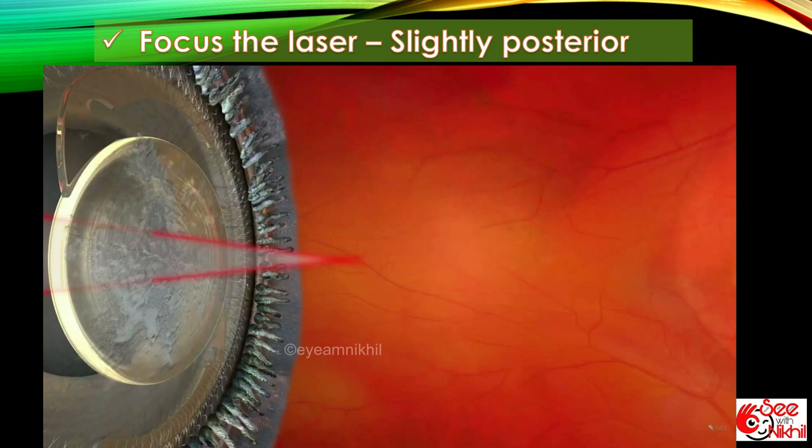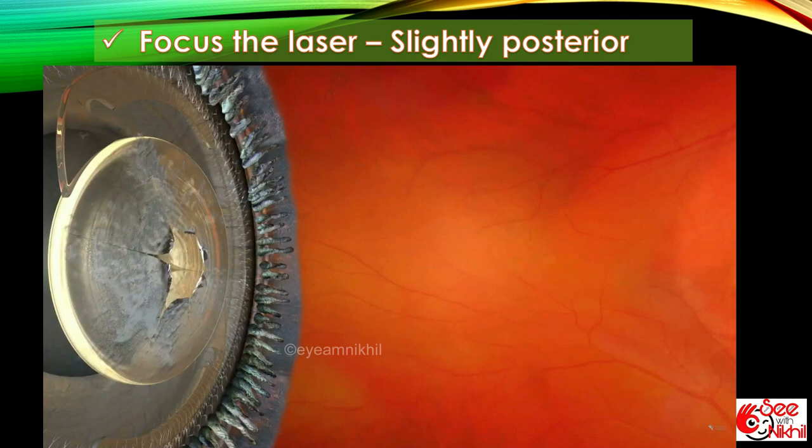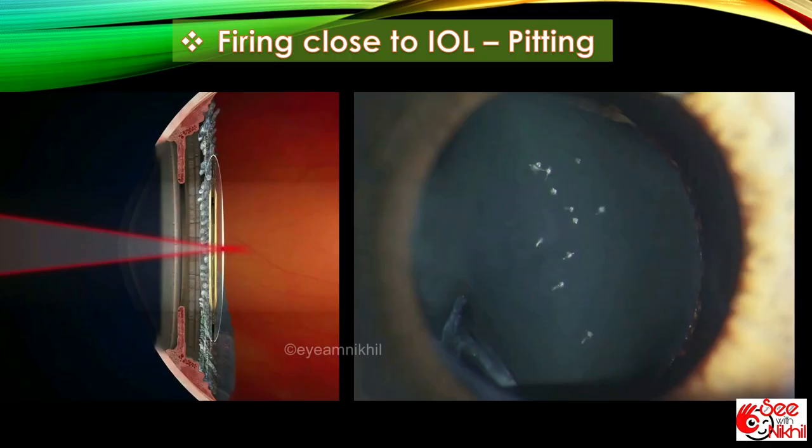When laser is fired, energy is generated at this point which results into a shock wave that travels forward and ruptures the posterior capsule. The reason for keeping the focus posteriorly is to prevent any IOL damage. Firing the laser close to IOL may result in IOL pitting, which are permanent scars over the IOL.